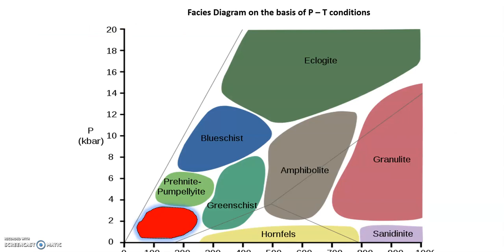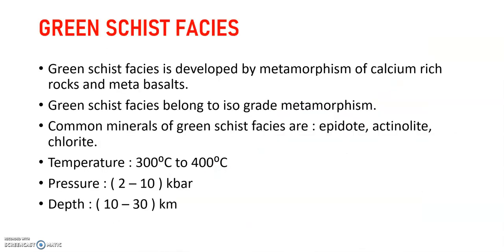The highlighted area is zeolite facies. Greenschist facies is developed by metamorphism of calcium-rich rocks and metabasalts. These belong to isograded metamorphism. Common minerals of greenschist facies are epidote, actinolite, and chlorite. It occurs at temperatures of 300°C to 400°C, pressures of 2 to 10 kilobars, and depths of 10 to 30 kilometers.